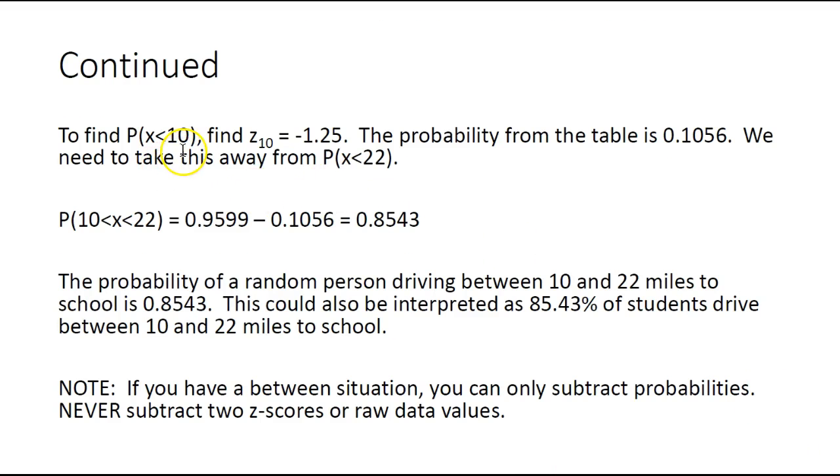The z-score of 10 turns out to be negative 1.25. Looking that up in the table, you'll get 0.1056—the probability someone drives less than 10 miles. We can take all that to the left of 22 and remove all that to the left of 10. If we subtract, we get between 10 and 22, which is 0.8543.